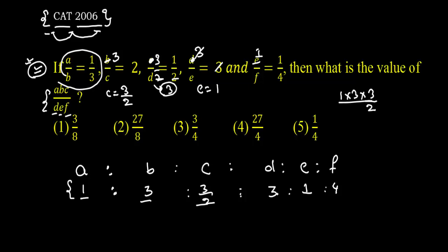The denominator is nothing but D, E, F. My D ratio value is 3, E ratio value is 1 and F ratio value is 4. So we can say this one is cancelled out. This becomes 3 out of 8.